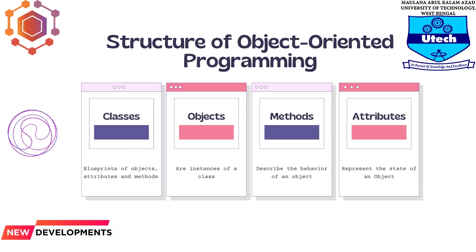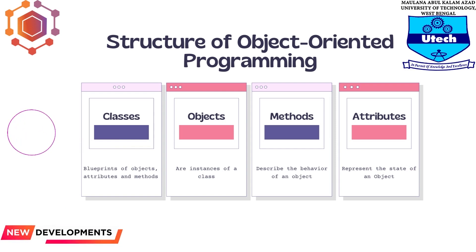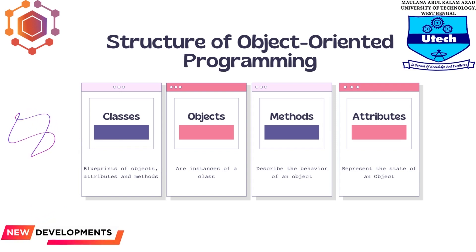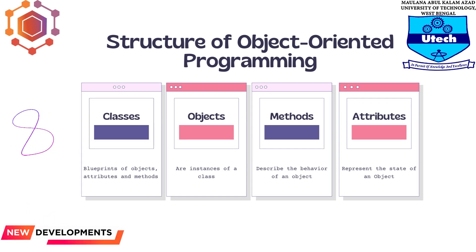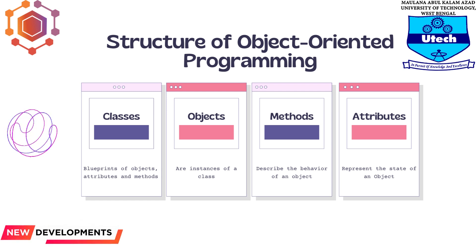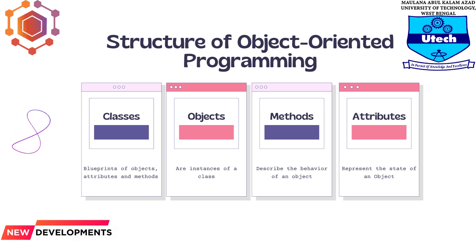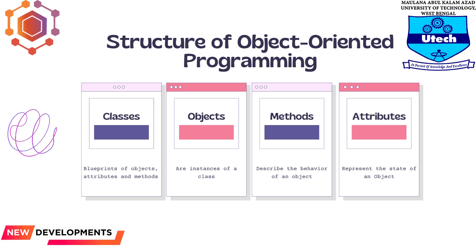What is the structure of object-oriented programming? The structure or building blocks of object-oriented programming include the following: classes are user-defined data types that act as the blueprint for individual objects, attributes, and methods. Objects are instances of a class created with specifically defined data.